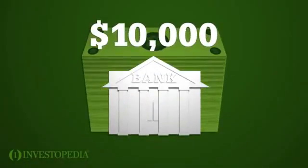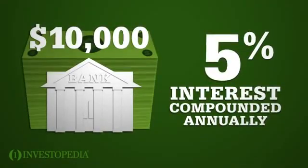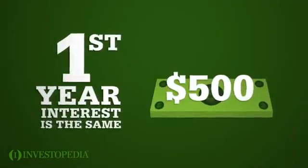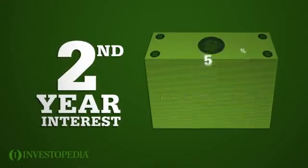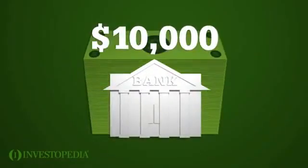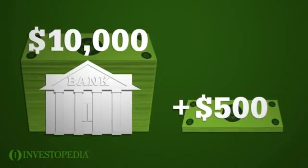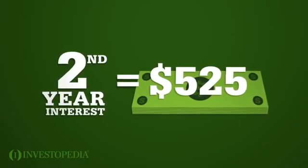Now instead, suppose that you deposit the same $10,000 at 5% interest compounded annually. In year 1, the interest you earn is the same: $500. But in year 2, the interest you earn is 5% times $10,500 — the original amount plus the interest you earned in year 1. So the second year's interest is $525.